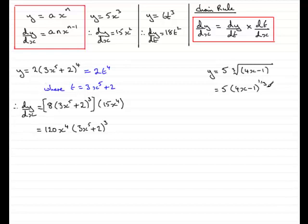If it was the fourth root it would be a quarter. If it was the square root it would just be a half. And so on. So we've got that y equals 5 bracket 4x minus 1 to the power of a third.